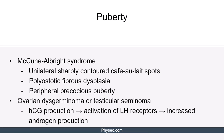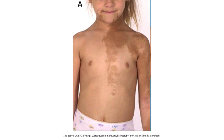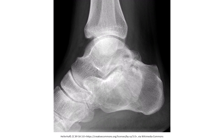Other causes of peripheral precocious puberty include McCune-Albright syndrome and ovarian dysgerminoma or testicular seminoma. McCune-Albright syndrome is a genetic condition associated with mosaicism that causes unilateral, sharply contoured cafe-au-lait spots, polyostotic fibrous dysplasia, and peripheral precocious puberty. Ovarian dysgerminoma and testicular seminoma produce HCG, which activates the LH receptors, resulting in increased androgen production. Here we see the cafe-au-lait spots characteristic of McCune-Albright syndrome; due to their sharp edges, these spots sometimes resemble the coast of Maine. This is an x-ray image showing central hyperlucency in the bone consistent with fibrous dysplasia, characterized by replacement of the bone with fibroblasts and collagen.